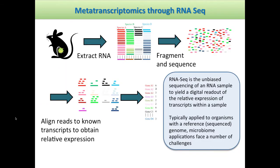So how do we go about doing metatranscriptomics? The basic process is through RNA-seq technology, which has been around a number of years now. RNA-seq is the unbiased sequencing of an RNA sample — unlike microarrays — to yield a digital readout of the relative expression of transcripts in the sample. We extract the RNA from the mouse, fragment all these RNAs, sequence it, and then align these reads to known transcripts to get a readout of the relative expression.